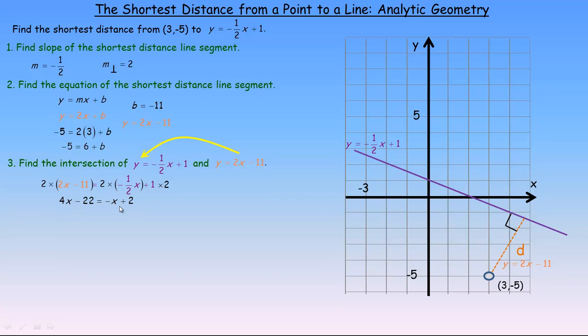Now we're trying to isolate for x. This will give us the x-coordinate at that point of intersection. And so if we bring the negative x over or add x to both sides, we would get 5x on the left and add 22 to both sides. So 2 plus 22 is 24. And if we then divide out the 5, 24 divided by 5 gives you 4.8. So the x-coordinate at this point is 4.8. And that's not hard to imagine that because it goes 1, 2, 3, 4, and that would be 5. So the x-coordinate is a little bit below 5.